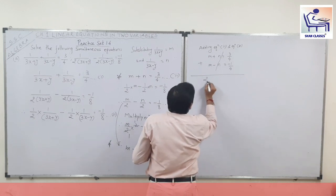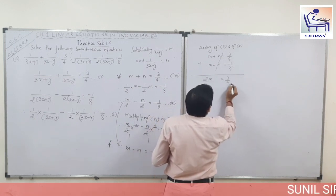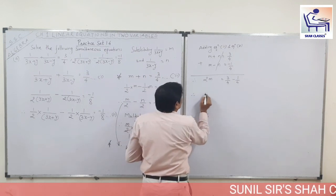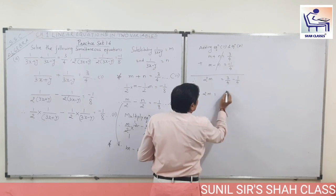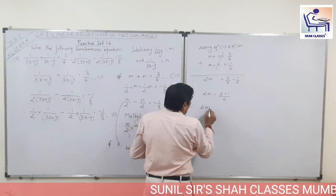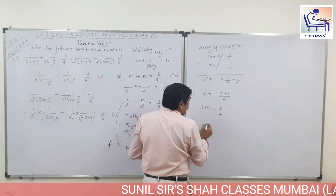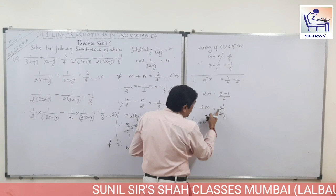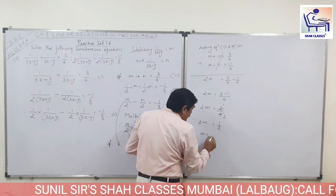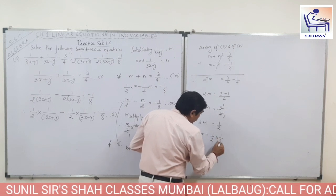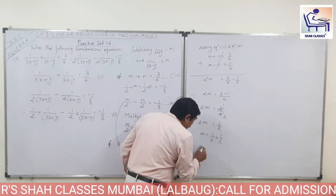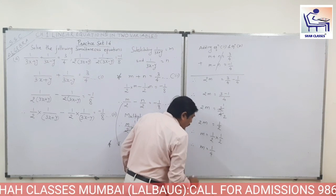What remains: 2M is equal to 3 upon 4 minus 1 upon 4. Since denominators are same, 3 minus 1 upon 4 is 2 upon 4, which simplifies to 1 upon 2. So 2M is equal to 1 upon 2. Transferring 2 to the other side: M is equal to 1 upon 2 into 1 upon 2, which is 1 upon 4. So the value of M is 1 upon 4.